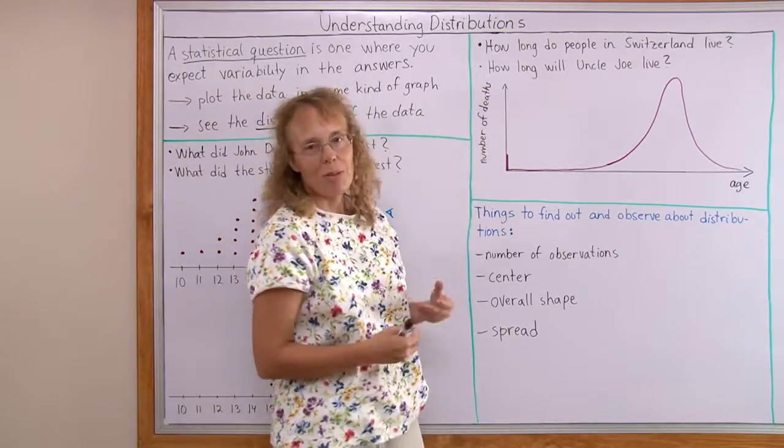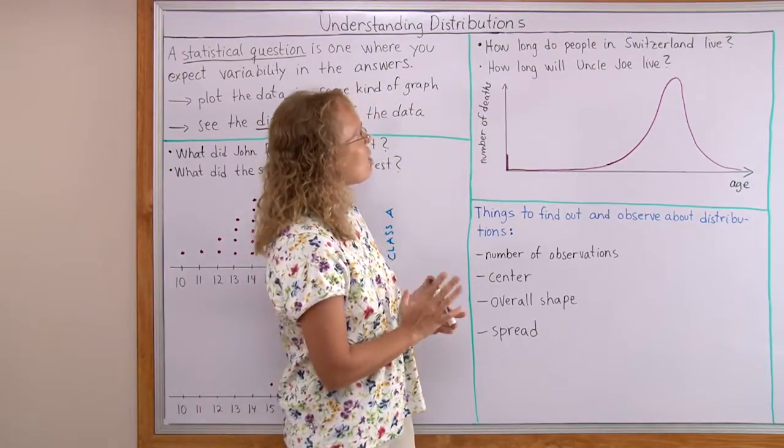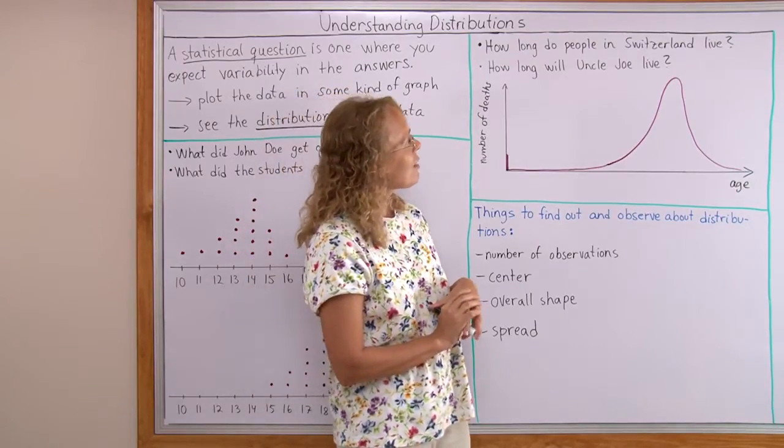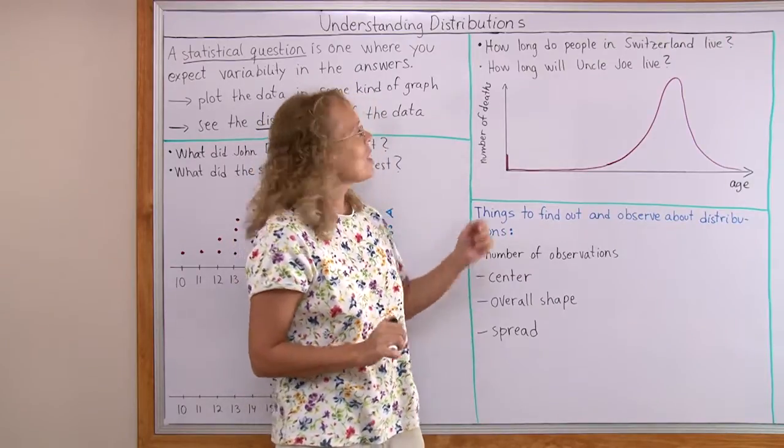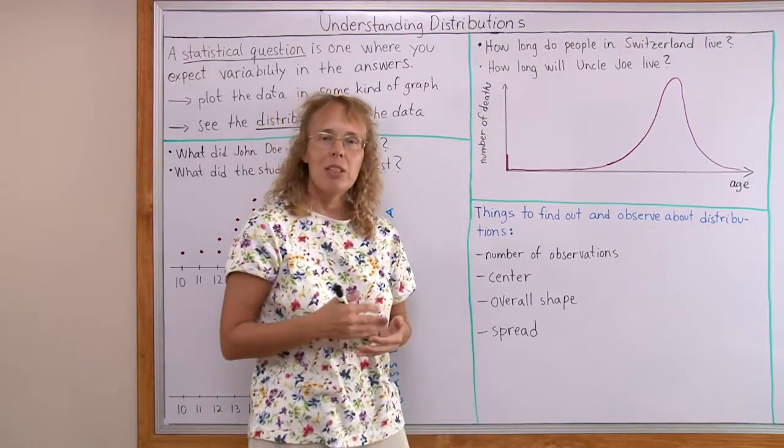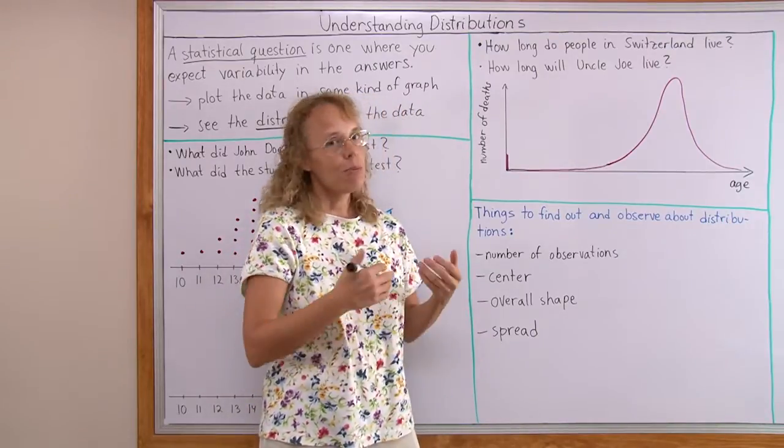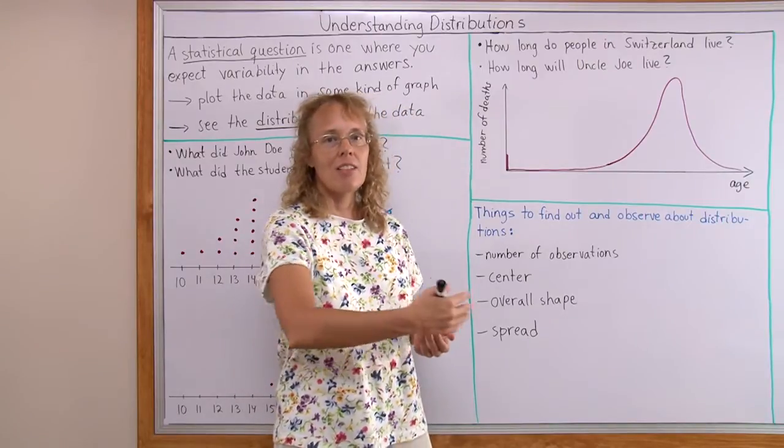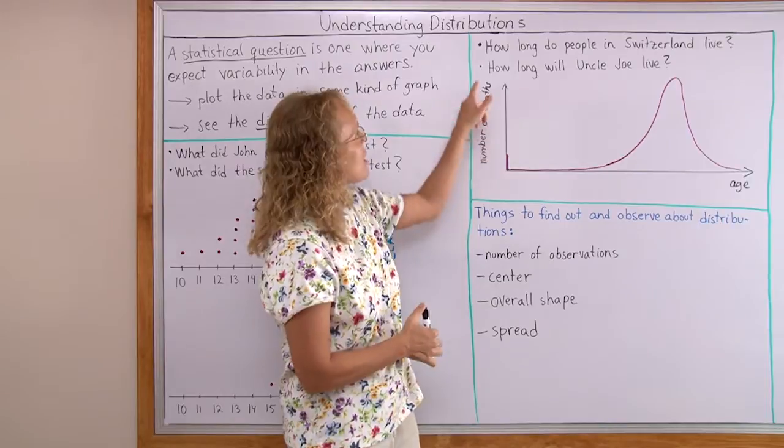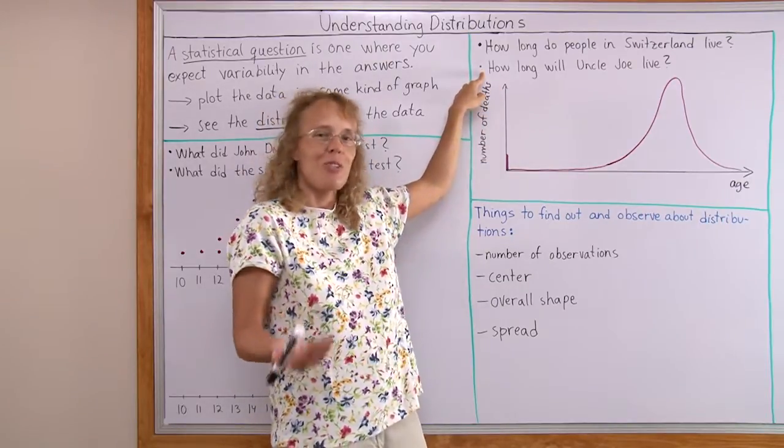First of all, I have two questions here. We need to find out which one of them is a statistical question. How long do people in Switzerland live? And then how long will Uncle Joe live? Obviously the first one is a statistical question because we expect many different answers. There's lots of people in Switzerland and they live different lengths of years. Their lives are of different lengths. Whereas this is about an individual person and if he's still living we don't even know the answer.